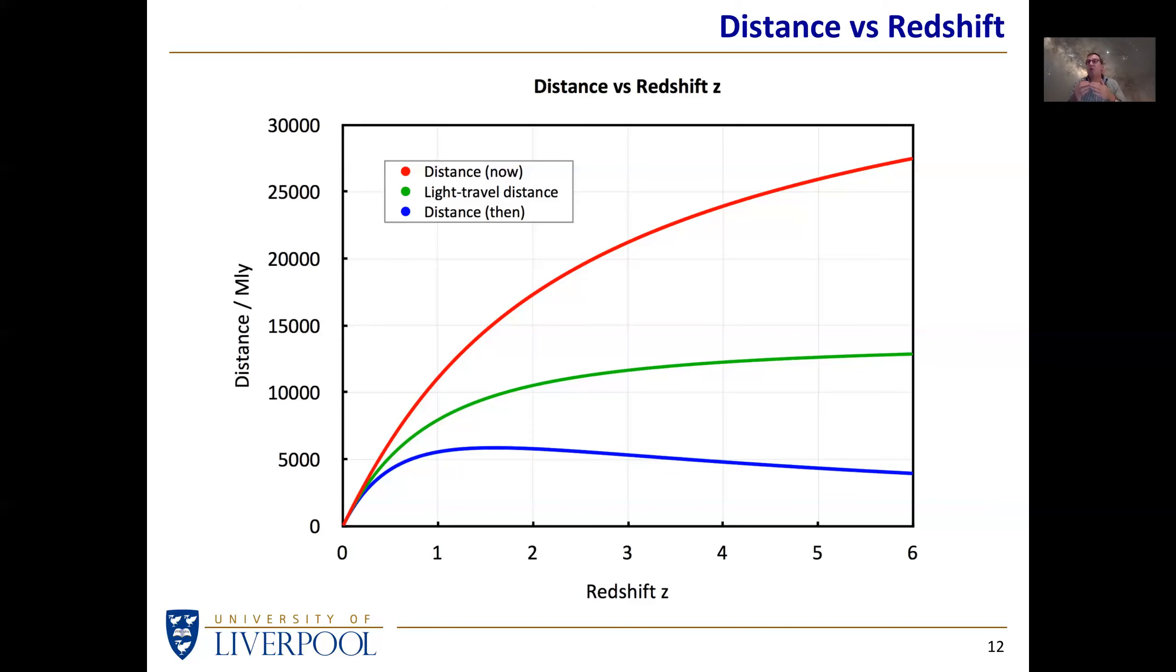As long as we understand how that expansion has taken place, then by measuring the redshift we can determine distances. We can tell how long the light has travelled from the object to us, that's the green line. We can tell how far away was the object when the light first left that particular object on its journey to us, that's the blue line. And how far is it from us to the object now that the light has reached us, that's the red line. So you can see that there are at least three different ways of measuring distance. In this particular case, we are looking at our favourite quasar, which is at a redshift of 4.315.